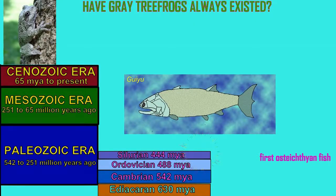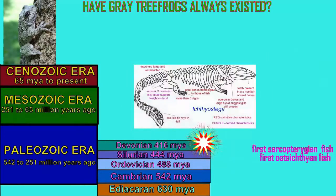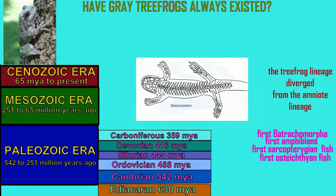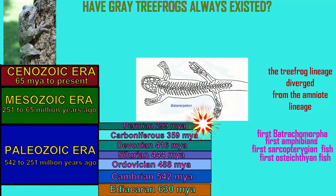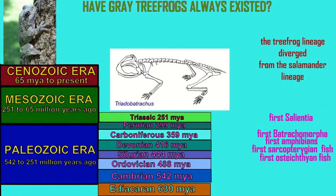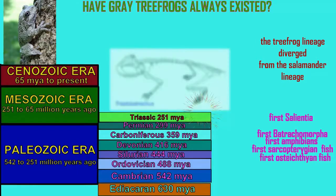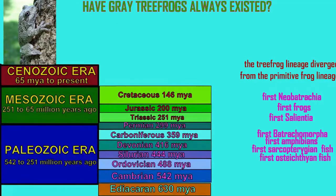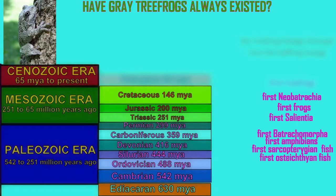Frogs in general, and tree frogs specifically, have not always existed in the fossil record. Zero are known from the Precambrian or the Paleozoic era — in other words, no frogs, let alone gray tree frogs, are known for the overwhelming majority of the history of Earth. No Osteichthyan fish are known before the Silurian, no Sarcopterygian fish before the end of the Silurian, no amphibians before the Devonian, no amphibians of the group Batrachomorpha before the Carboniferous, and no Salientia before the Triassic. No frogs before the Jurassic.